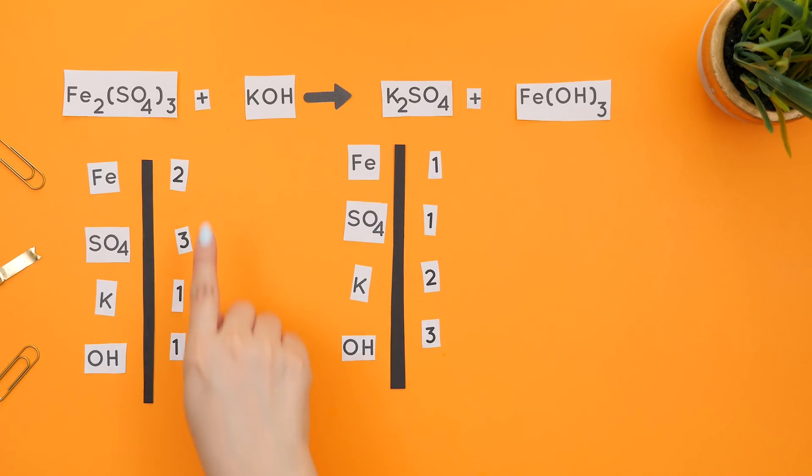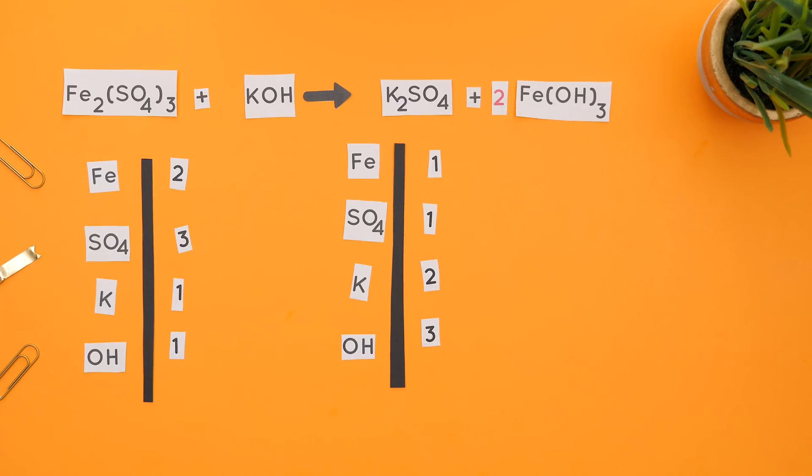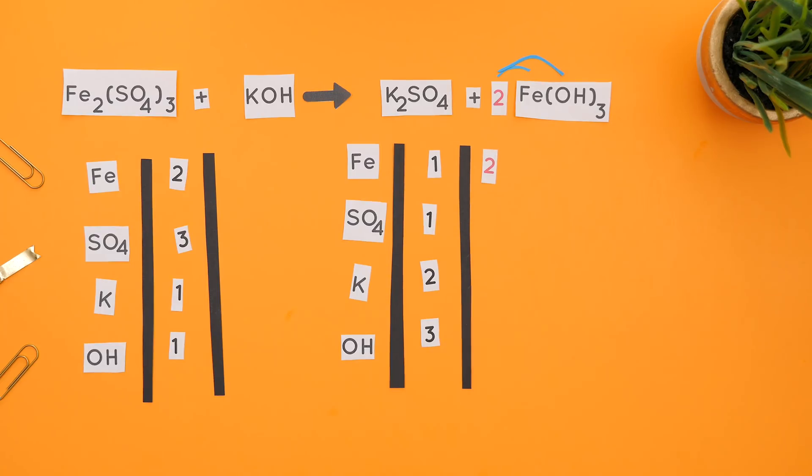Since there are two irons on the reactant side and only one on the products, we will place a two in front of the entire compound of iron hydroxide. By placing a two, this distributes to iron and OH. So we have two irons and two times three, which is six OHs.